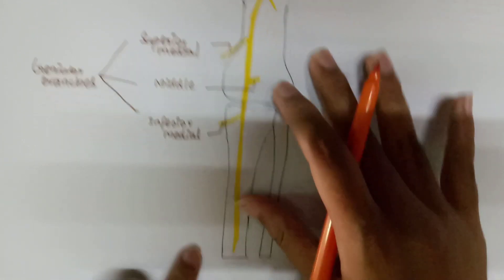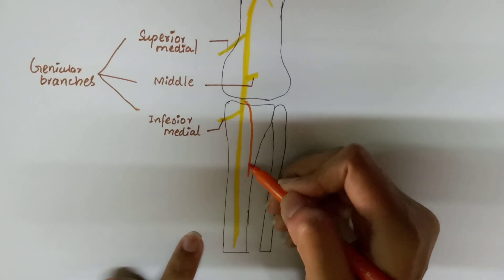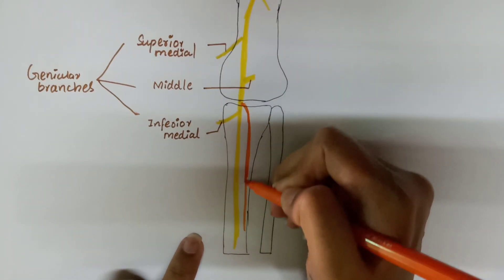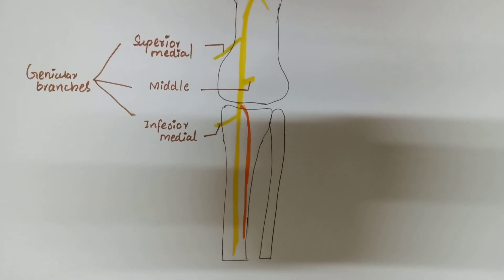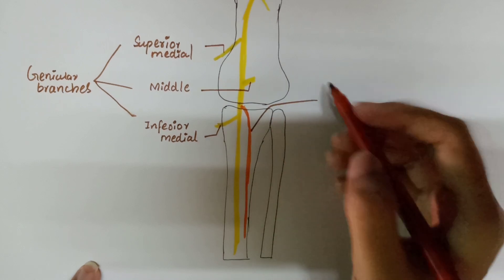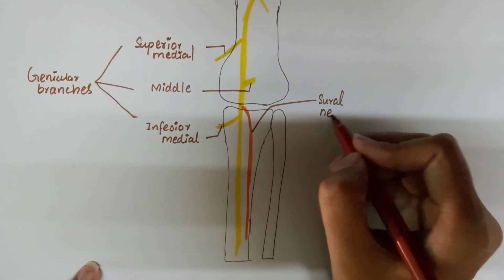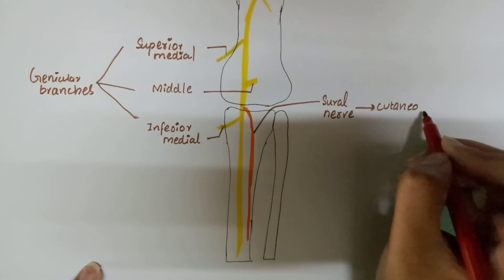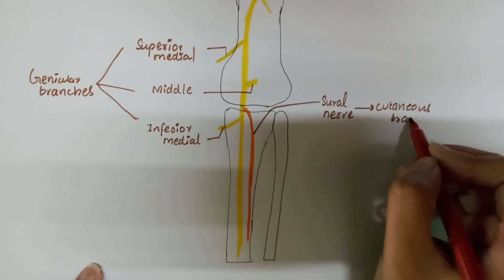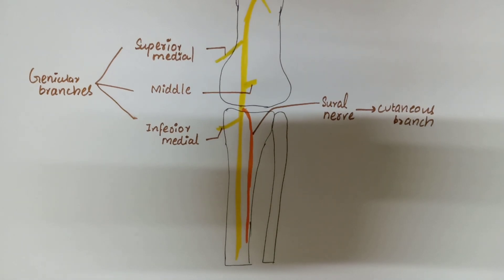Now we come to the cutaneous branch. There is only one cutaneous branch of the tibial nerve, which goes downward. The name of this cutaneous branch is the sural nerve.